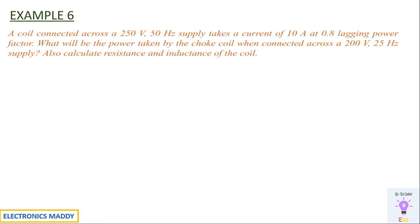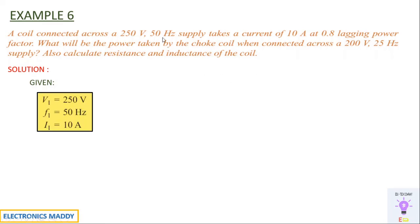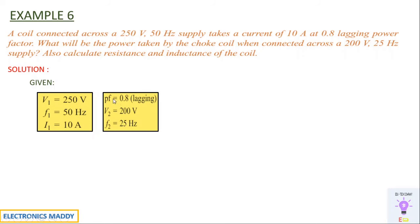Example six: a coil is connected across a 250 V, 50 Hz supply and takes 10 A at 0.8 lagging power factor. What will be the power taken when connected across a 200 V, 25 Hz supply? Also calculate resistance and inductance. The lagging power factor confirms this is a series RL circuit. Given: V1 = 250 V, f1 = 50 Hz, I1 = 10 A, power factor = 0.8, V2 = 200 V, f2 = 25 Hz.